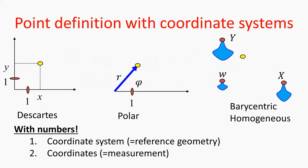Everything should be defined with numbers because a computer can only deal with numbers. So when we need a point, this point should be associated with numbers. We know the solution, which is the application of a coordinate system. Generally speaking, a coordinate system is a geometric reference system plus some measuring instructions, and if we follow these measuring instructions, we end up with numbers identifying a given point.